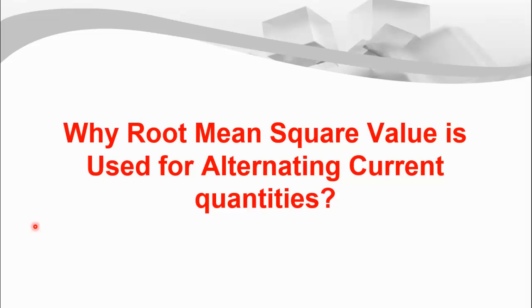Hello viewers, welcome to another video. In this video we will see why root mean square value is used for alternating current quantities like AC voltages or AC current. First of all we'll see the difference between DC and AC quantities, and then I'll show you how to compute root mean square value.